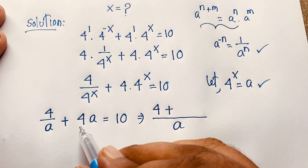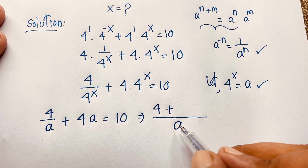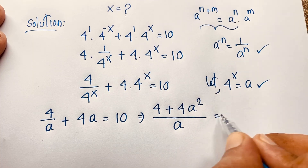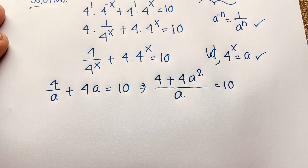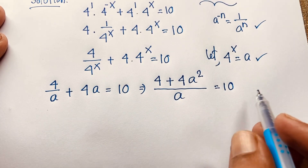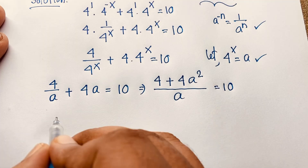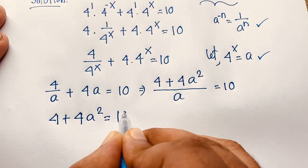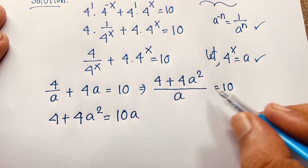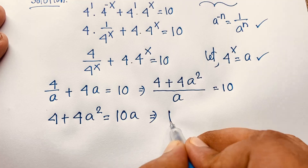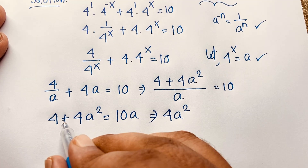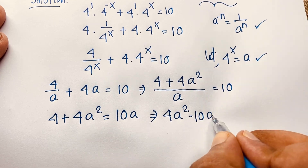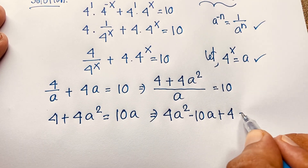Taking common denominator a: (4 plus 4a squared) over a equals 10. Multiplying both sides by a, we find 4 plus 4a squared equals 10a. Moving 10a to the left side, we get 4a squared minus 10a plus 4 is equal to 0.